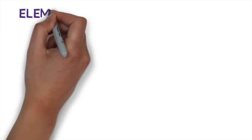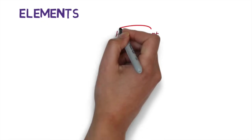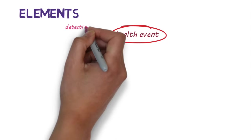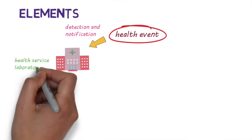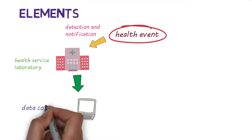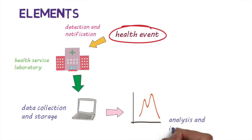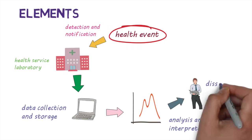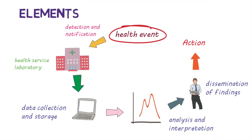Surveillance systems have a few basic elements. First is the way of detecting health events and notifying them, which is usually done by a health service or laboratory. Then the information needs to be collected and stored in a systematic way. This data then needs to be analyzed and interpreted, and finally, this information has to reach the right people so that appropriate action can be taken.